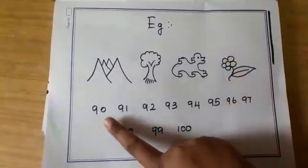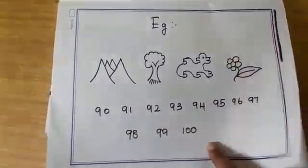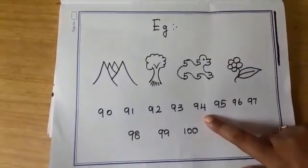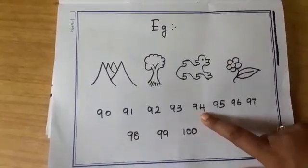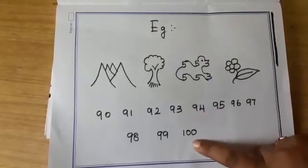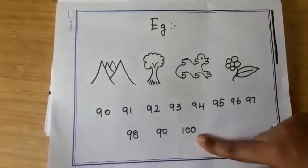So I am taking here another example, 90 to 100. So here what will be the successor of 94? Successor of 94 is 95. What is the predecessor of 100? Predecessor of 100 is 99.